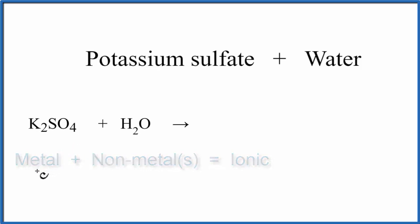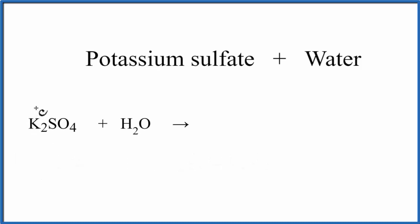We go to the periodic table — potassium is in group one, so it has a plus one charge. And then sulfate, that's our polyatomic ion SO4, it has a two minus charge, and you find that by looking up on a table of polyatomic ions. So we'll put a two minus right there.